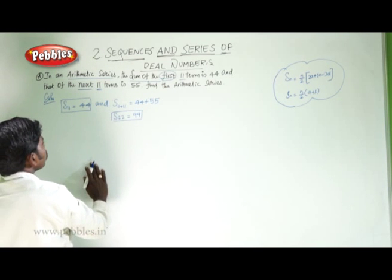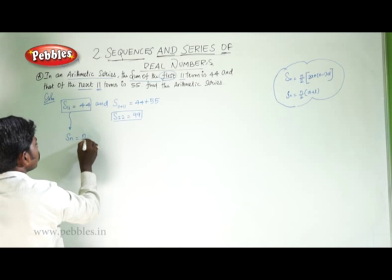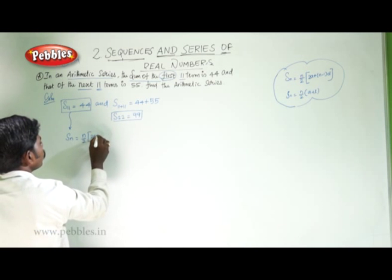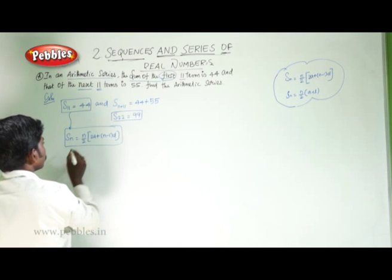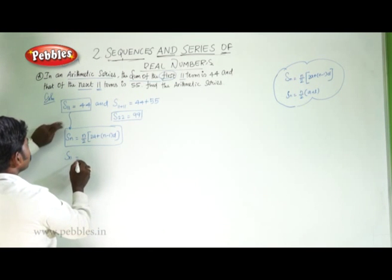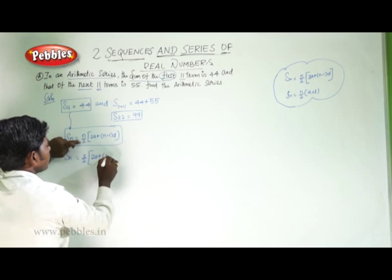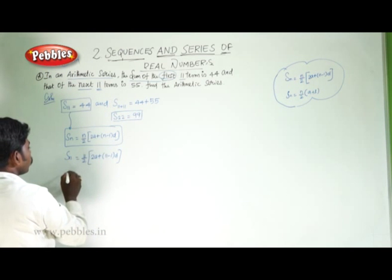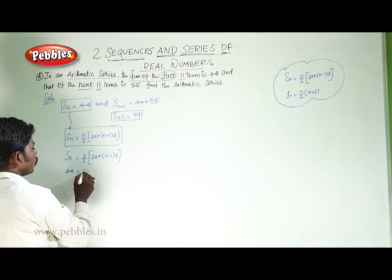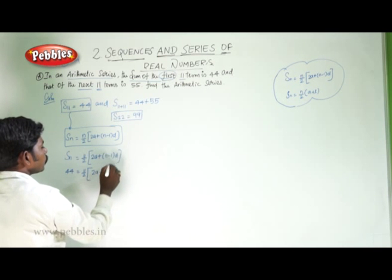Now find the arithmetic series. We know Sn is equal to n by 2 into 2a plus n minus 1 into d. So S11 is equal to 11 by 2 into 2a plus 11 minus 1 into d. The value of S11 is 44, so 44 is equal to 11 by 2 into 2a plus 10d.